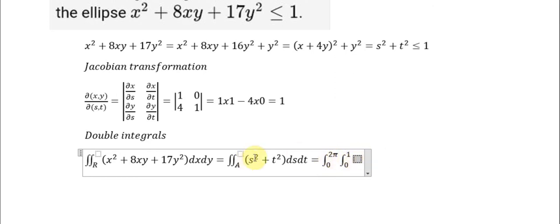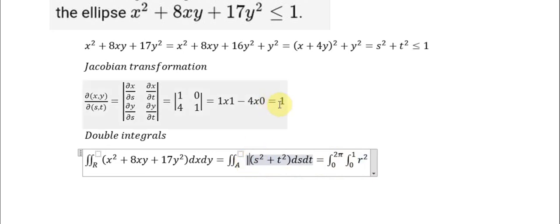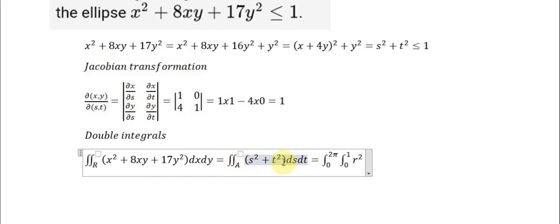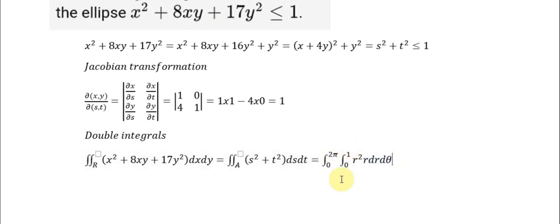S squared plus T squared becomes R squared. Since the Jacobian value is 1, we don't need to write the Jacobian transformation explicitly — we can eliminate it. So we have R dR dθ. These are the basic integrals and we just calculate from here.